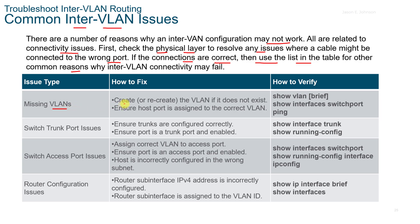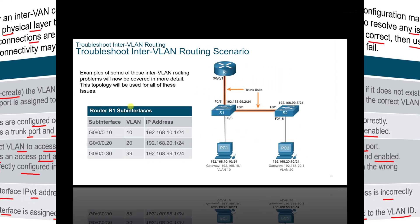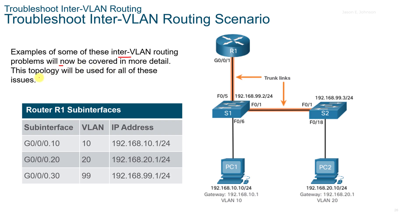Also check your switch trunk port issues — ensure your trunks are configured properly and the trunk port is enabled. Make sure the host is not incorrectly configured in the wrong subnet. For router configuration issues on the Router on a Stick configuration, the router subinterface IPv4 addresses might be incorrectly configured, and you should check that the router subinterface is assigned to the correct VLAN. You can verify the subinterface using the show IP interface brief command, and use the show interface command to verify VLAN assignments. These issues can be explored in detail using Packet Tracer labs.